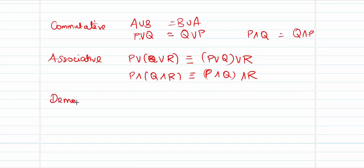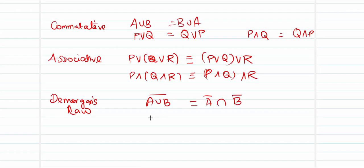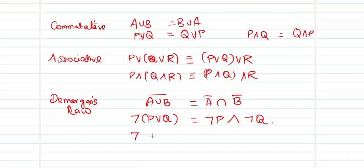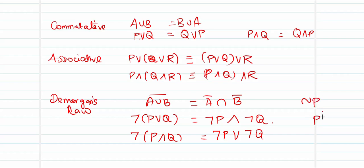De Morgan's law states that (A ∪ B)̄ = Ā ∩ B̄, so ¬(P ∨ Q) ≡ ¬P ∧ ¬Q. Similarly, ¬(P ∧ Q) ≡ ¬P ∨ ¬Q — when negation is distributed separately to each variable, the operator flips. Negation can be denoted by a bar or by the ¬ symbol; if the question paper uses either notation, they mean the same thing.